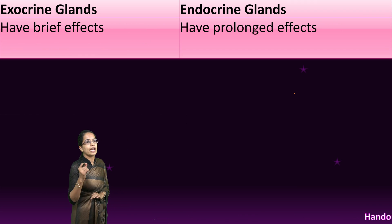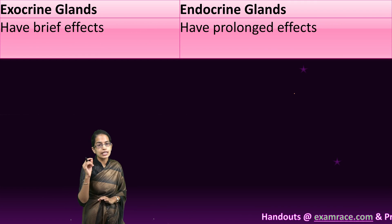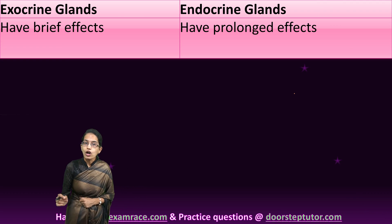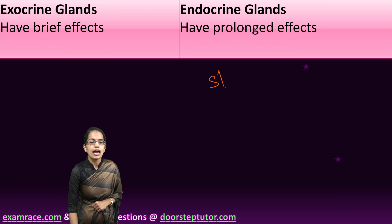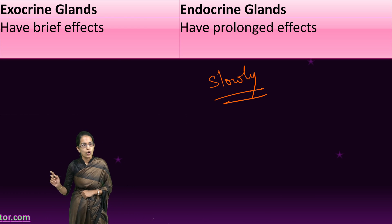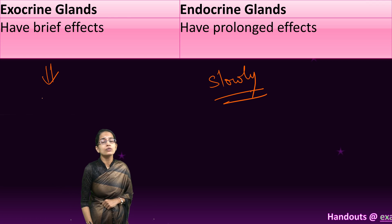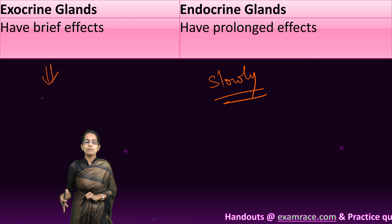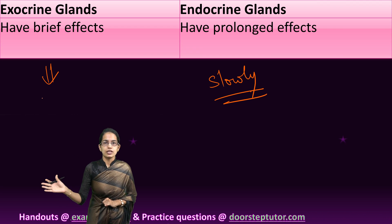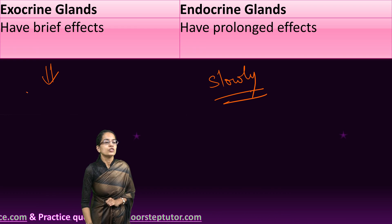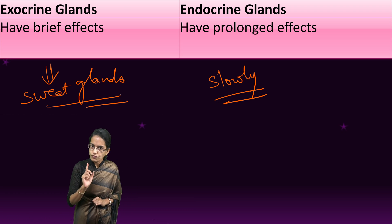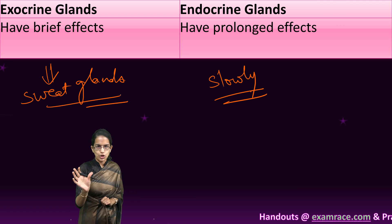The next important difference is that endocrine glands have a prolonged effect. The effect is long lasting because the message travels very slowly, and since the message travels slowly, the effect remains for a longer duration. With exocrine glands — if you go out for rigorous exercise, you sweat for a brief period, then return and everything turns normal. So exocrine glands have an effect that remains for a shorter duration.